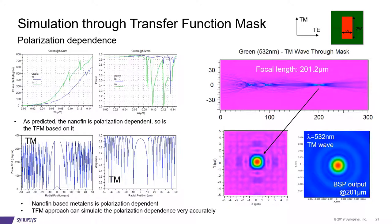Now let's check on the polarization dependence of a different structure, such as nanofins. Shown here are both the phase and the transmitted power. As we predicted, the nanofin is polarization dependent, so this means the transfer function mask that is based upon it is too. However, the simulated focal length is not that off, only one micrometer away. With this, the BSP simulation algorithm also confirms the BPM result. At this point, we can draw a short summary that number one, a nanofin-based metal lens is polarization dependent, and number two, the TFM approach can simulate the polarization dependence very accurately.